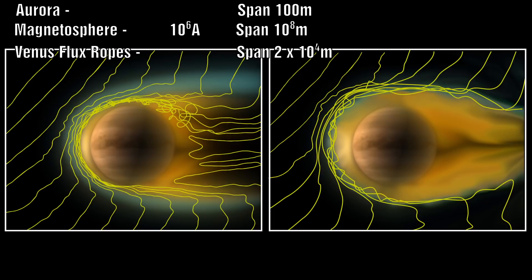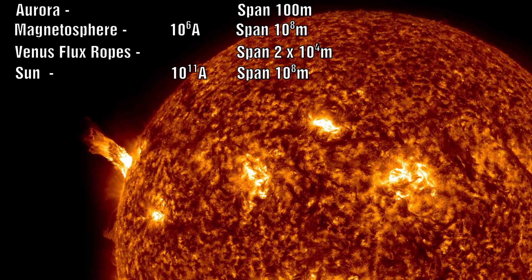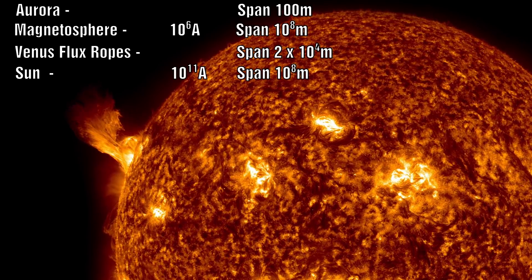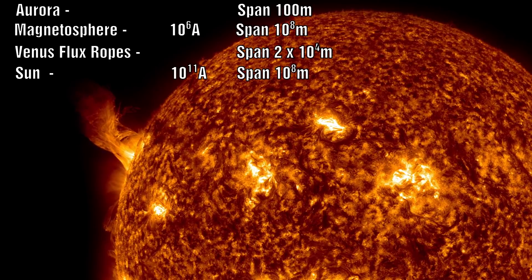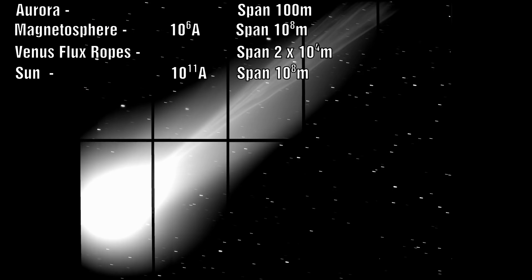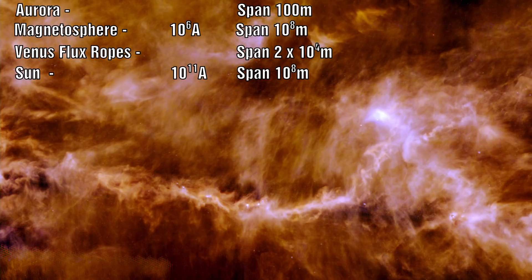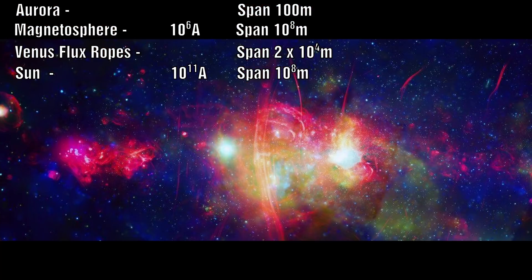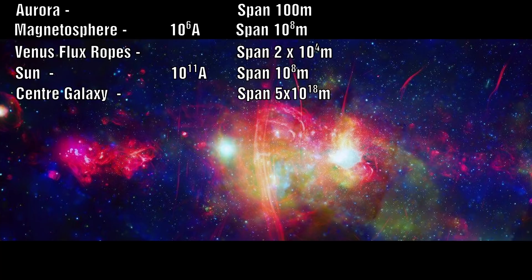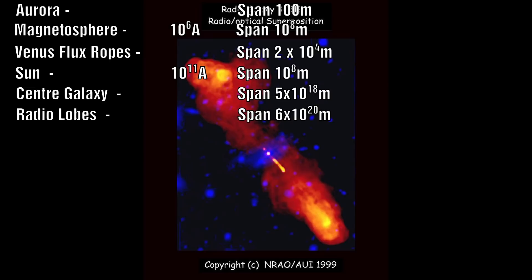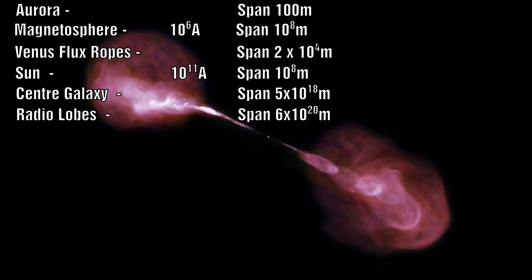In the ionosphere of Venus, flux ropes are observed which are typically about 20 km (2 × 10⁴ m). In the Sun, prominences, spicules, coronal streamers, and polar plumes all show filamentary structure; prominences are thought to carry a current of around 10⁴ A. Cometary tails often have a pronounced filamentary structure. In the interstellar medium and interstellar clouds there is an abundance of filamentary structures. In the centre of the galaxy there are twisting plasma filaments held together by a magnetic field possessing both azimuthal and poloidal components, extending for nearly 500 light-years. Within the radio lobes of double galaxies, filament lengths may exceed 20 kpc.